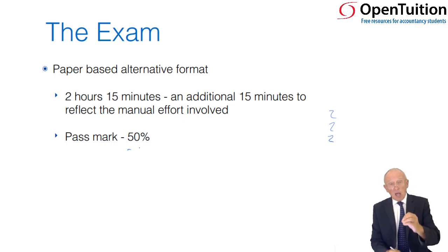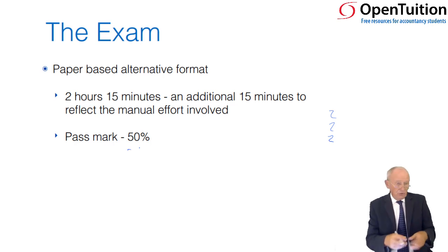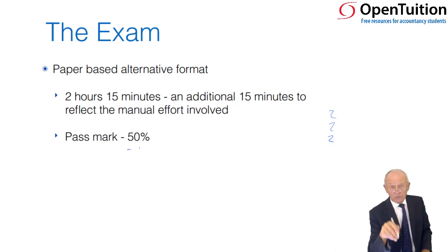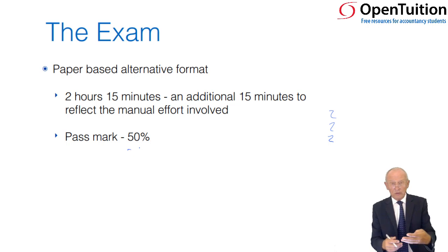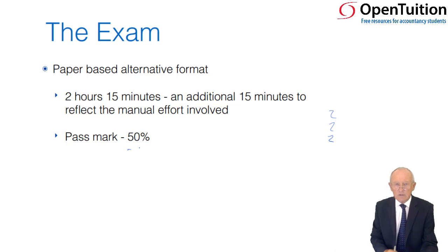The passmark is 50% — every ACCA exam has a passmark of 50%. In the law paper, it is a crime for students not to have attempted the full paper. In a multiple-choice question, if you don't know the answer, move on — but come back to it. At the end of the exam, if you have four questions unanswered, guess. There are no negative marks in any of the exams, so you have nothing to lose. With four choices per question, you have a one-in-four chance — that one extra mark could make all the difference.